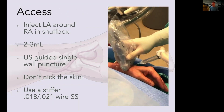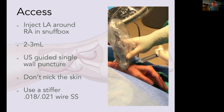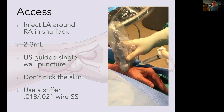Access can be done under ultrasound — and I think it's better to do so. Inject local anesthetic under ultrasound guidance, about 2-3 mLs into the snuff box. Try to do a single-wall puncture if you can. You don't need to inject a huge amount of local anesthetic; too much can move the artery. I don't nick the skin — this is personal preference, but be very careful as you're even more superficial than at the wrist. Use a stiffer wire: I use an 0.018 stainless steel wire; you can use 0.021, but definitely stay away from spring-coiled wires.